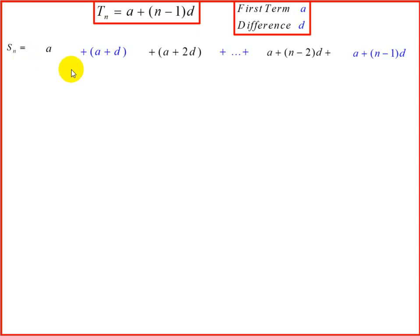Now if we reverse this and we start at the opposite end, we can say that S_n is equal to—so we're going to bring our last term first. So we're going to rewrite the entire top. The last term comes first: it's a plus n minus 1d. Our second last term would be a plus n minus 2d.